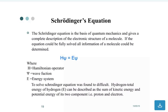The Schrödinger equation is the basis of quantum mechanics and gives a complete description of the electronic structure of molecules. If the equation could be fully solved, all information about molecules could be determined. HΨ = EΨ where H is the Hamiltonian operator, Ψ is the wave function, and E is the energy of the system. Solving the Schrödinger equation is awfully difficult.